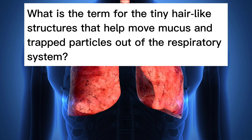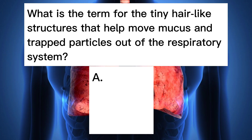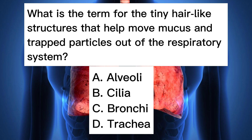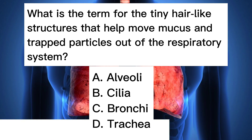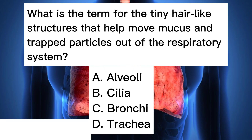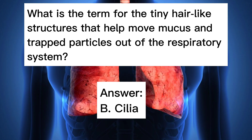What is the term for the tiny hair-like structures that help move mucus and trapped particles out of the respiratory system? A. Alveoli. B. Cilia. C. Bronchia. D. Trachea. Answer: B. Cilia.